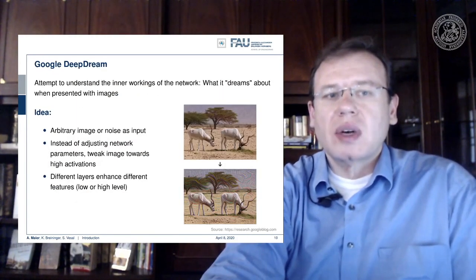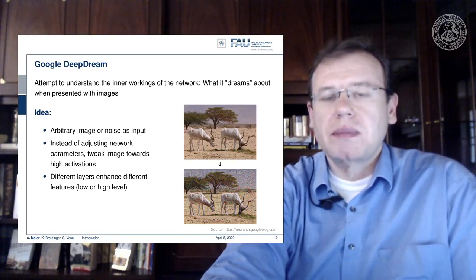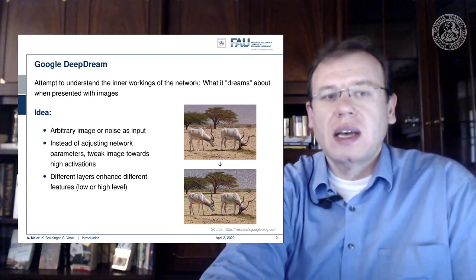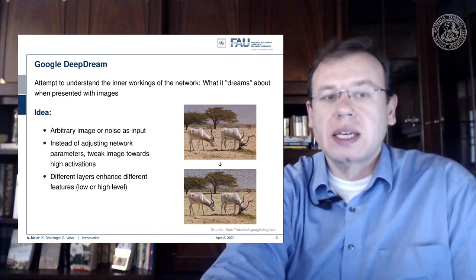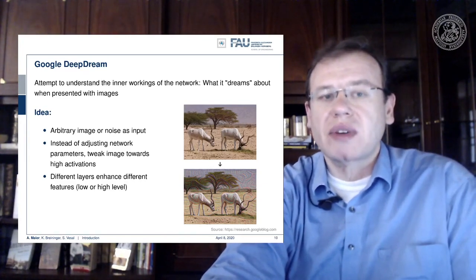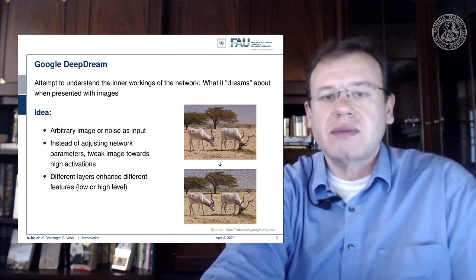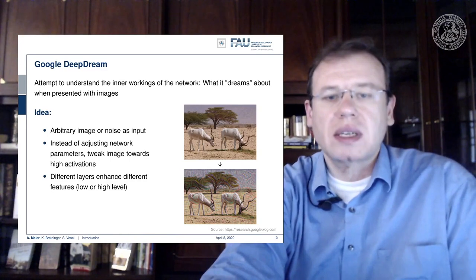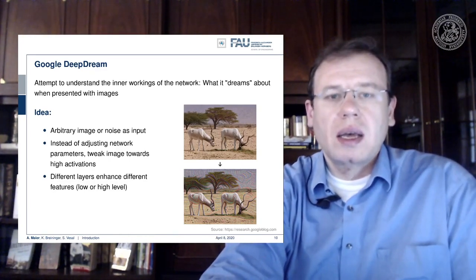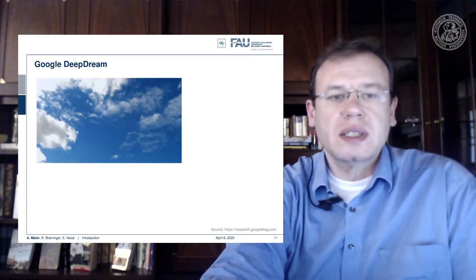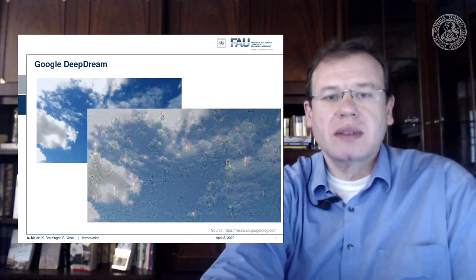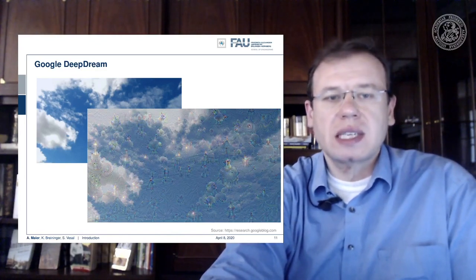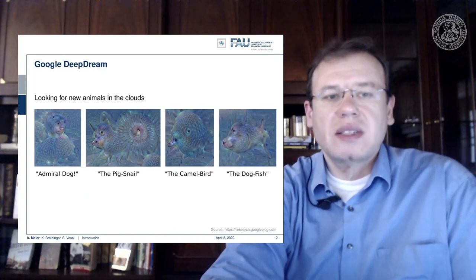In Google DeepDream, there was an attempt to understand the inner workings of the network — what the network dreams about when presented images. The idea was to show arbitrary input images or noise, then instead of adjusting network parameters, tweak the input towards high activations of the network. This creates very interesting, impressionistic images. You can put in blue sky images and tweak towards neurons, and suddenly all kinds of things emerge in the sky — new animals like the admiral dog, the pig snail, the camel bird, or the dogfish.